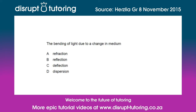So let's dive straight in. The question reads: the bending of light due to a change in medium is what? Is it A) refraction, B) reflection, C) deflection, or D) dispersion?